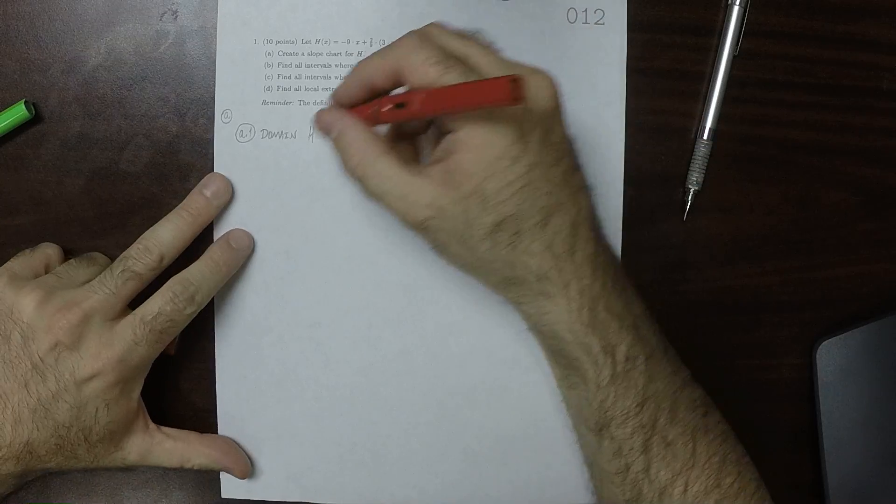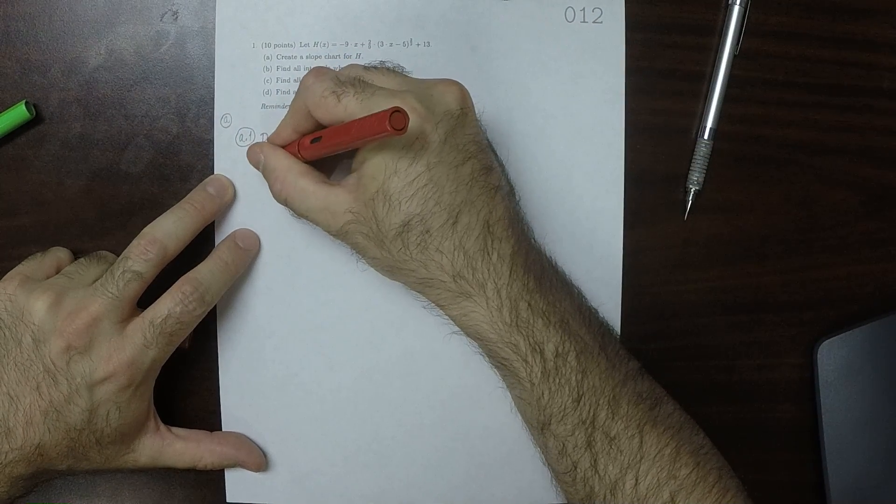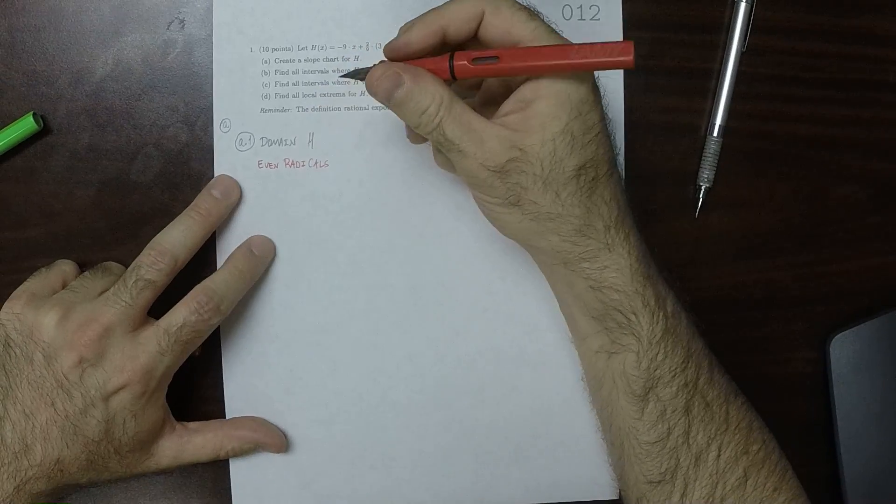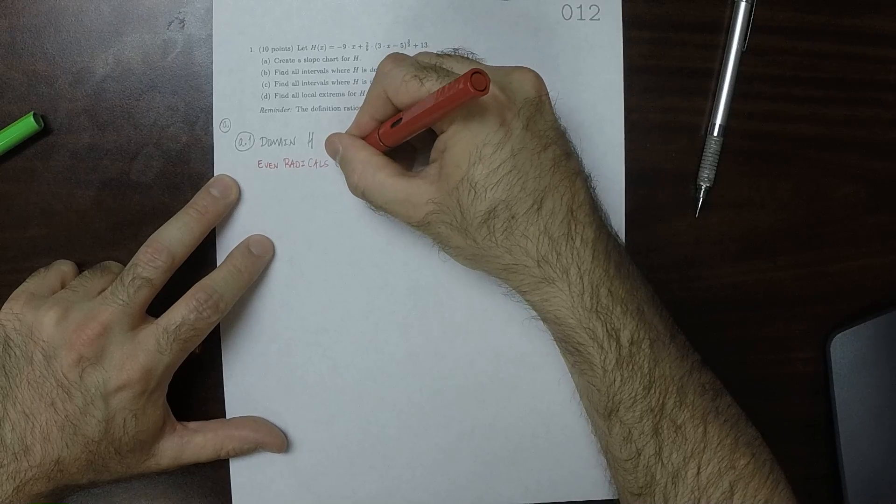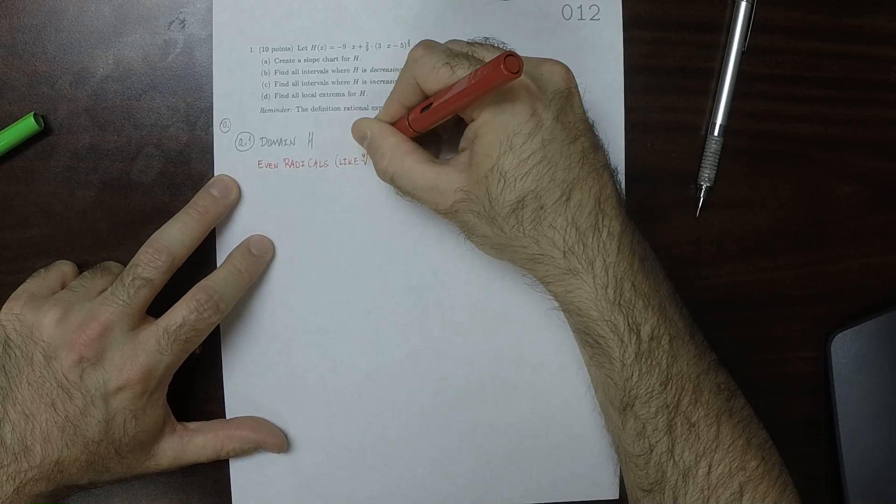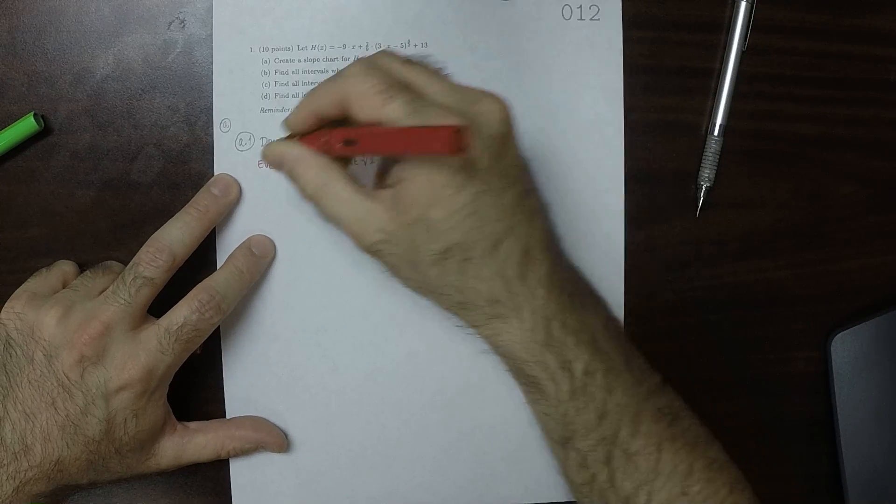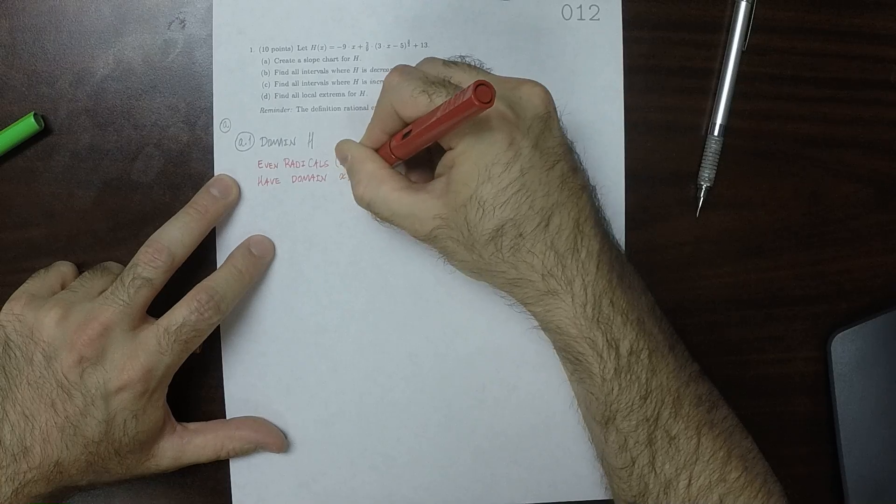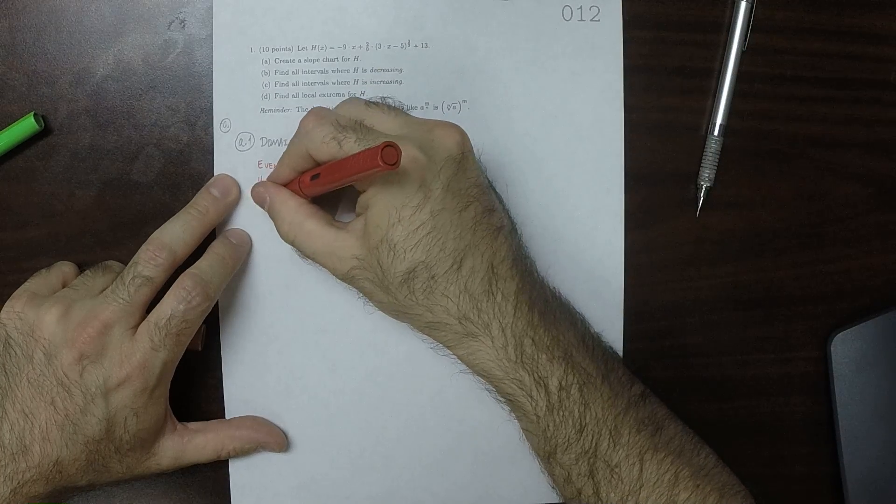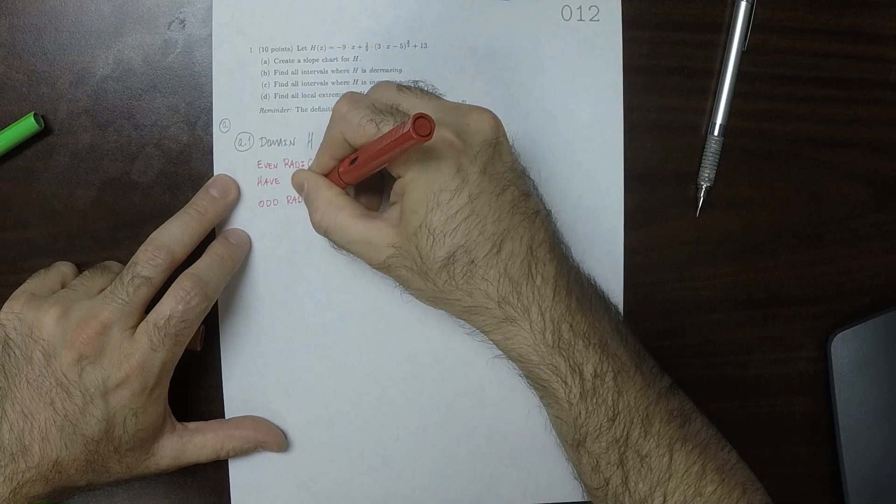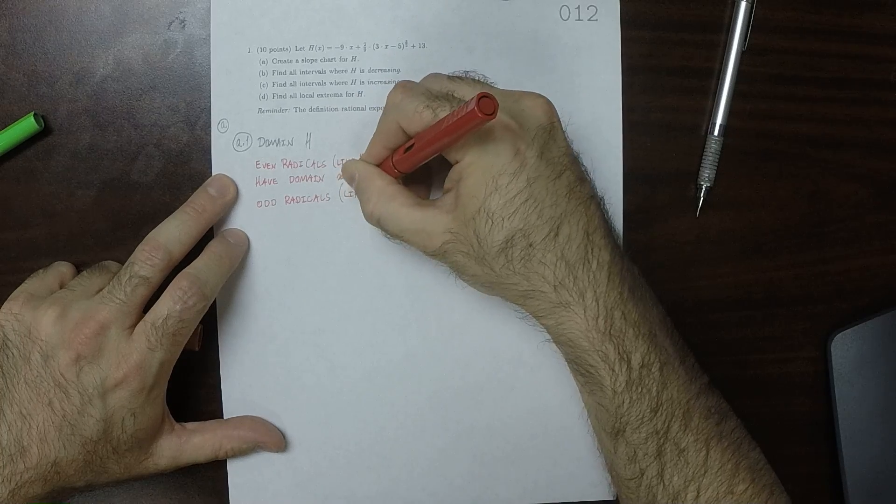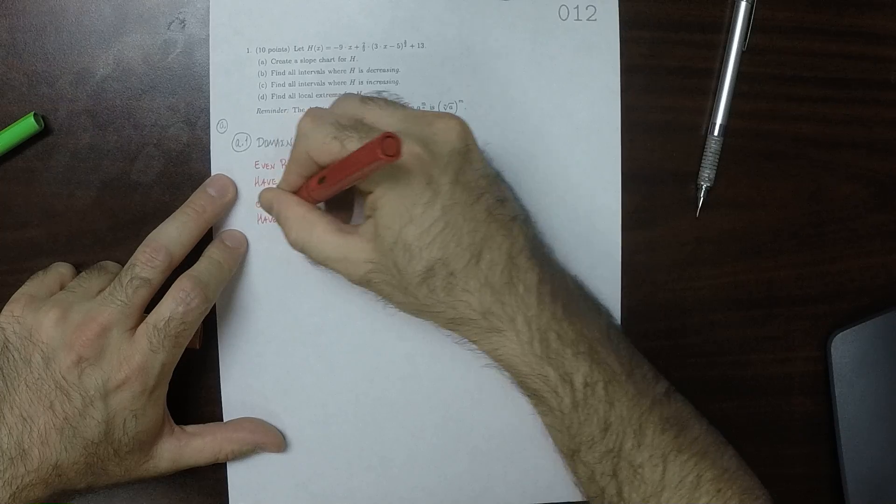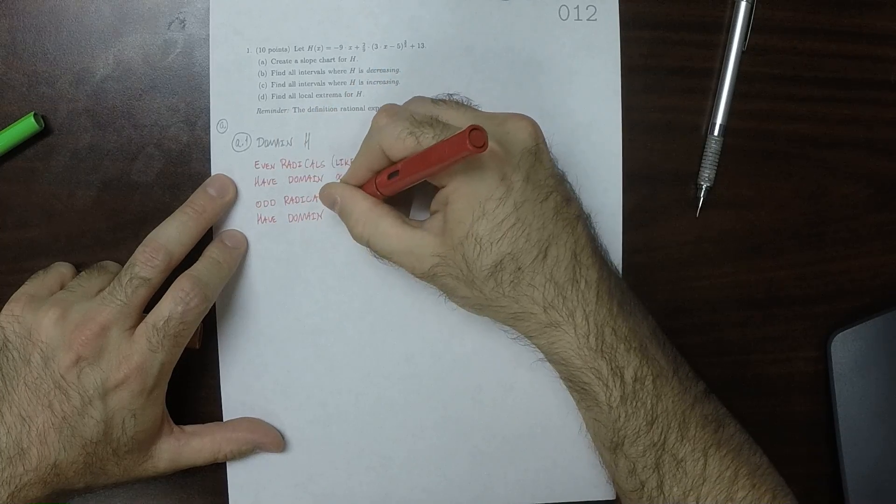So the thing that you need to remember about this is that even radicals, so for example, like fourth root of X, have domain X greater than or equal to zero. Whereas odd radicals, like fifth root of X, have domain all reals.